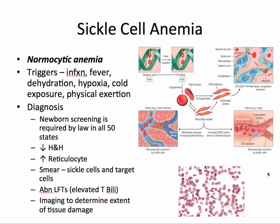Examples of vaso-occlusive crises include cerebrovascular accidents, sepsis, acute chest pain syndrome, reduced visual acuity, splenic sequestration, ulcers, and joint pain. Newborn screening for sickle cell anemia is required in all 50 states. In the labs you'll find a decreased hemoglobin and hematocrit, an increased reticulocyte count, and in the smear you'll see sickle cells as well as target cells.